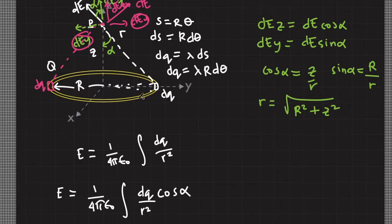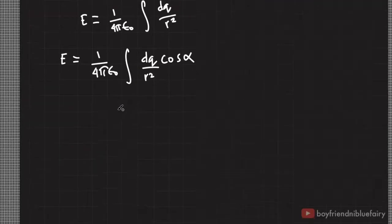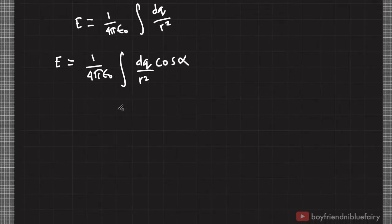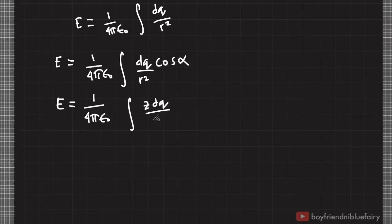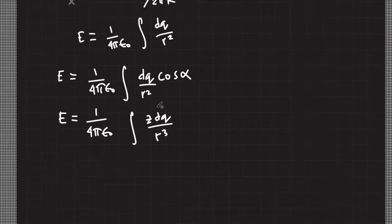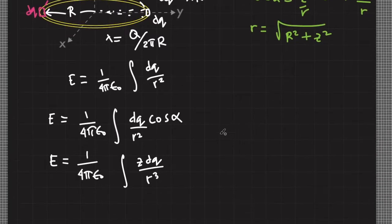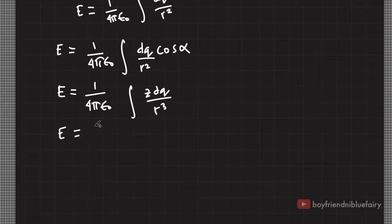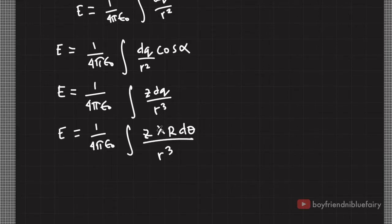Going back to the figure, let's assume the ring has uniform linear charge density lambda. Because the total charge is Q and the length of the ring is 2πR, lambda equals Q divided by 2πR. Returning to our equation, cosine alpha equals z over r, so we replace cosine alpha with z over r. Plugging in our expression for dq, E equals 1 over 4π epsilon-naught times the integral of z times lambda R dθ divided by r cubed.